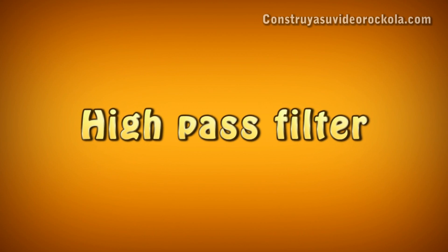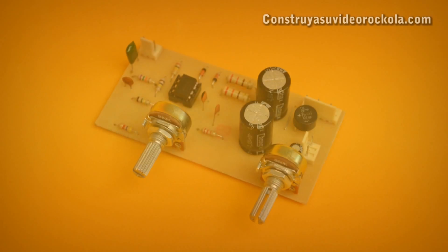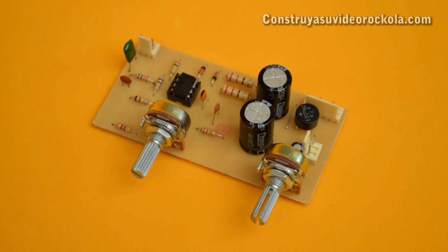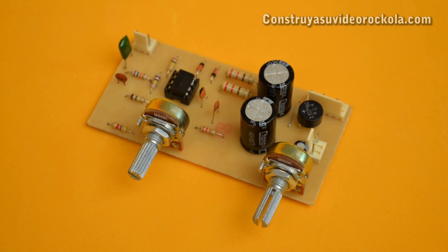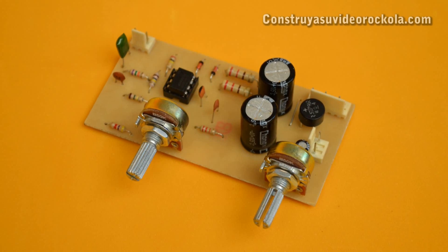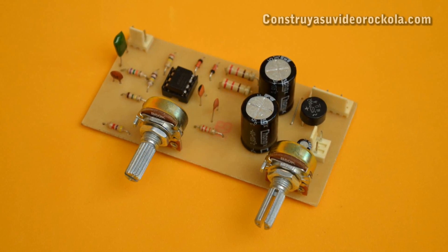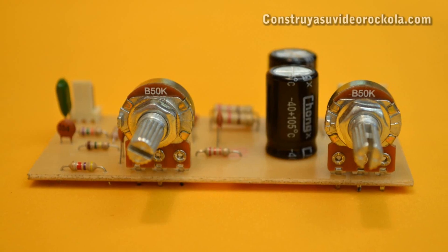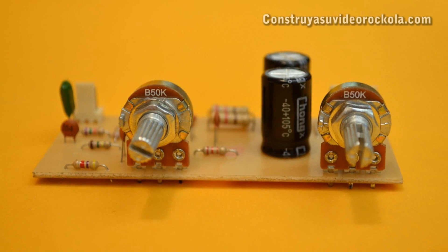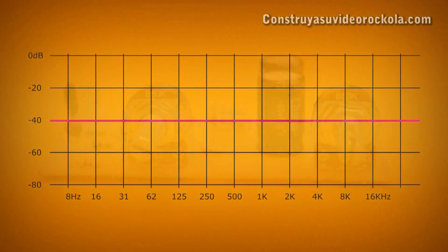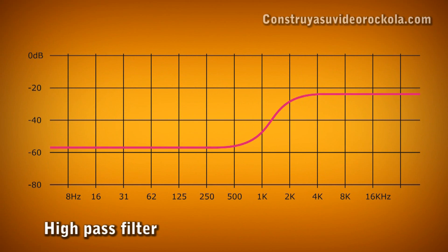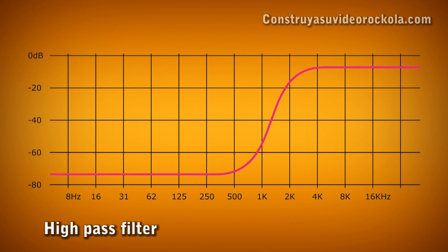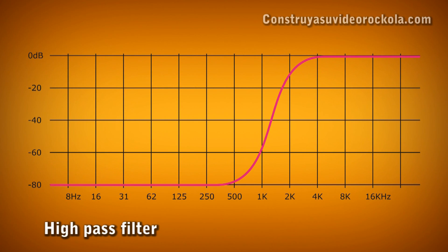High pass filter. The high pass filter is an electronic circuit that receives as its input the full frequency range and delivers only the high frequencies. In the process, it weakens the low and mid frequencies, letting the high frequencies pass.